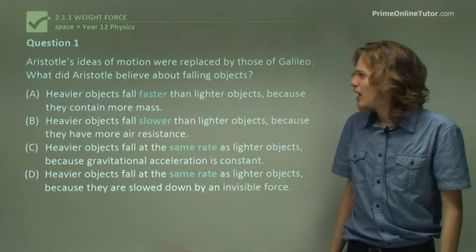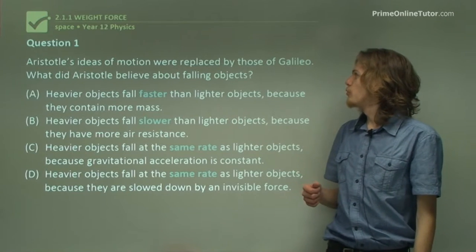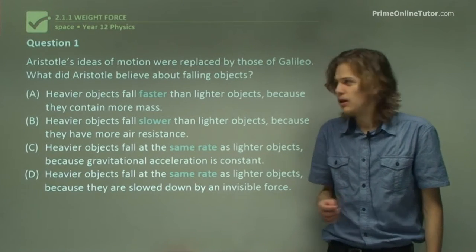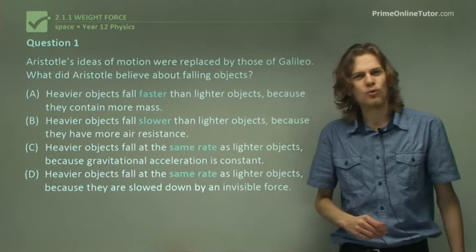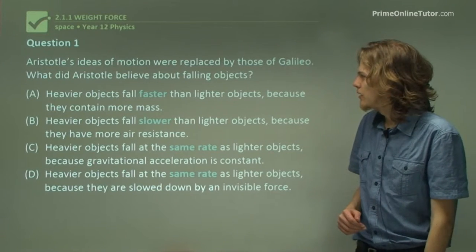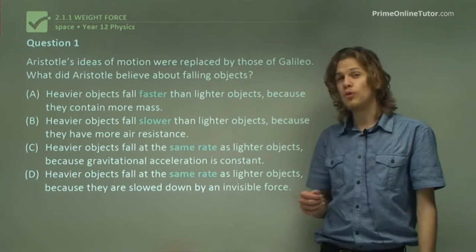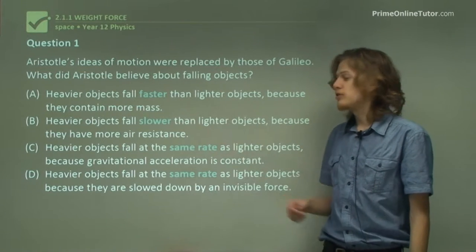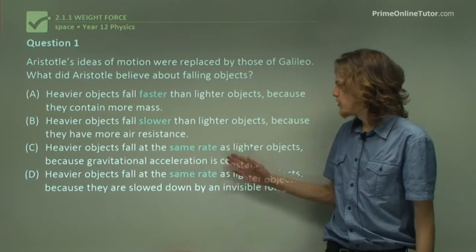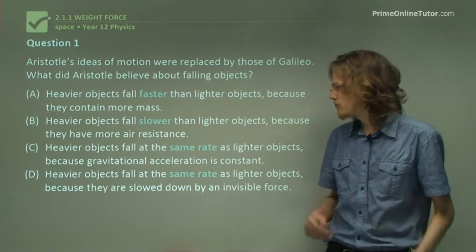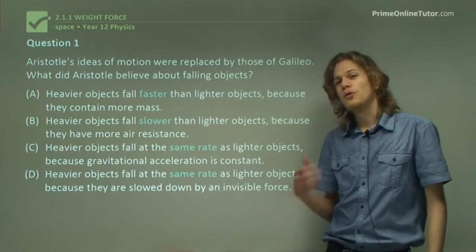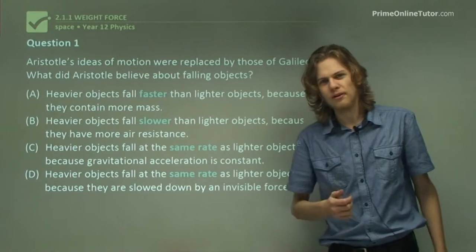Question one. Aristotle's ideas of motion were replaced by those of Galileo. What did Aristotle believe about falling objects? So we have a few options here. Heavy objects fall faster because they have more mass. They fall slower because they have more air resistance. They fall at the same rate because acceleration is constant. Or they fall at the same rate because there's an invisible force pushing them back up as they're trying to fall down.